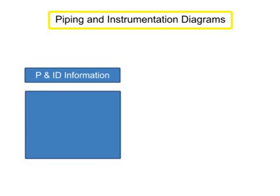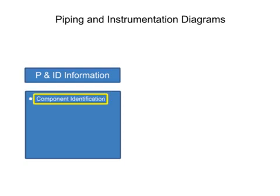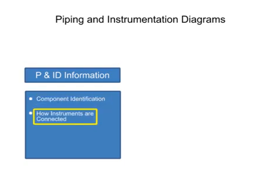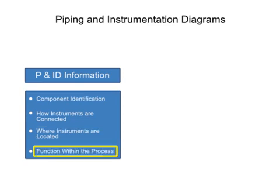Piping and instrumentation diagrams provide information that includes component identification, how instruments are connected, where instruments are located, and their function within a process.